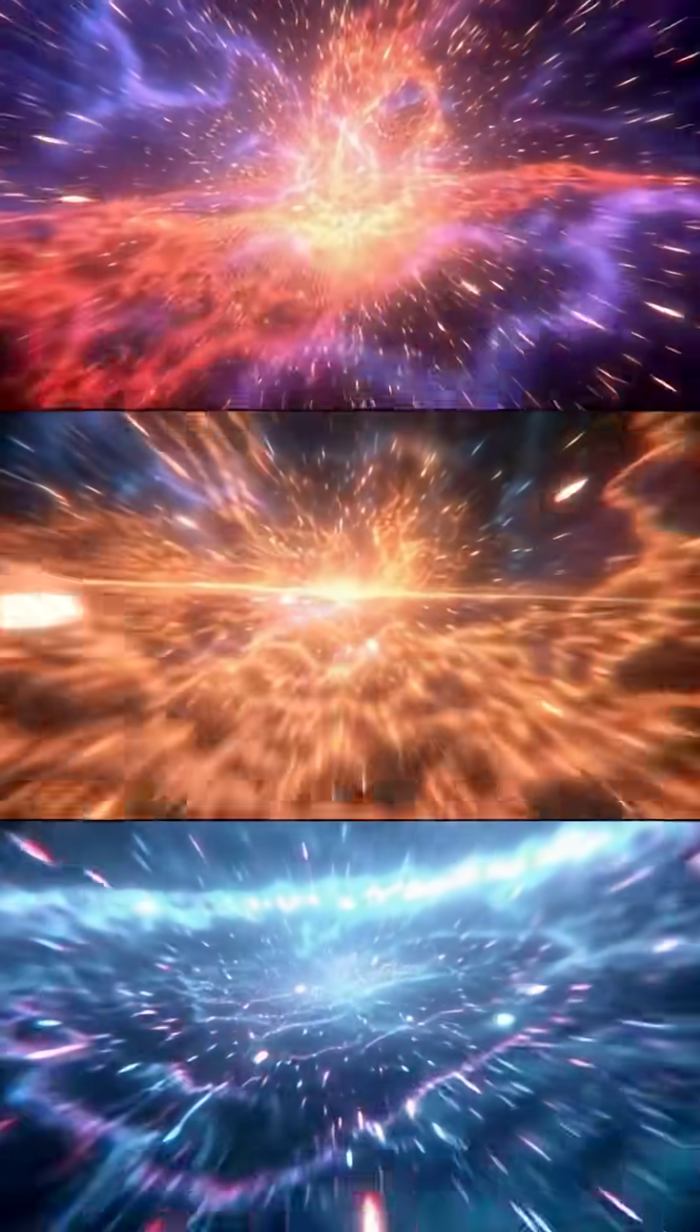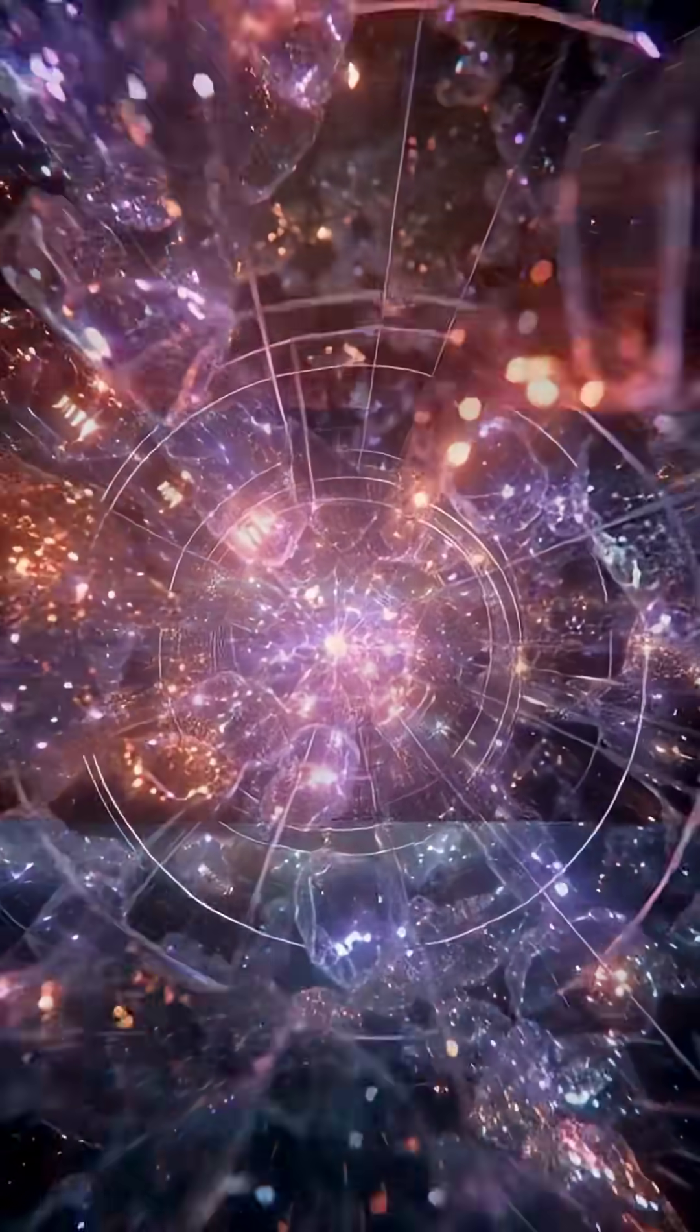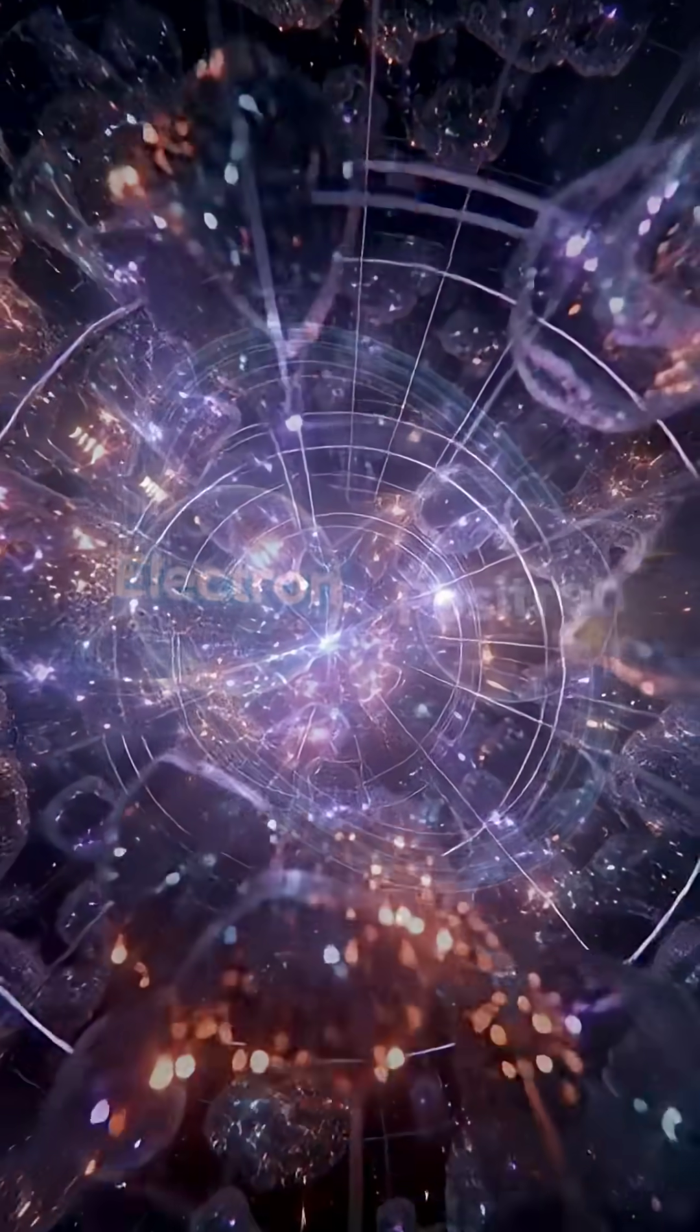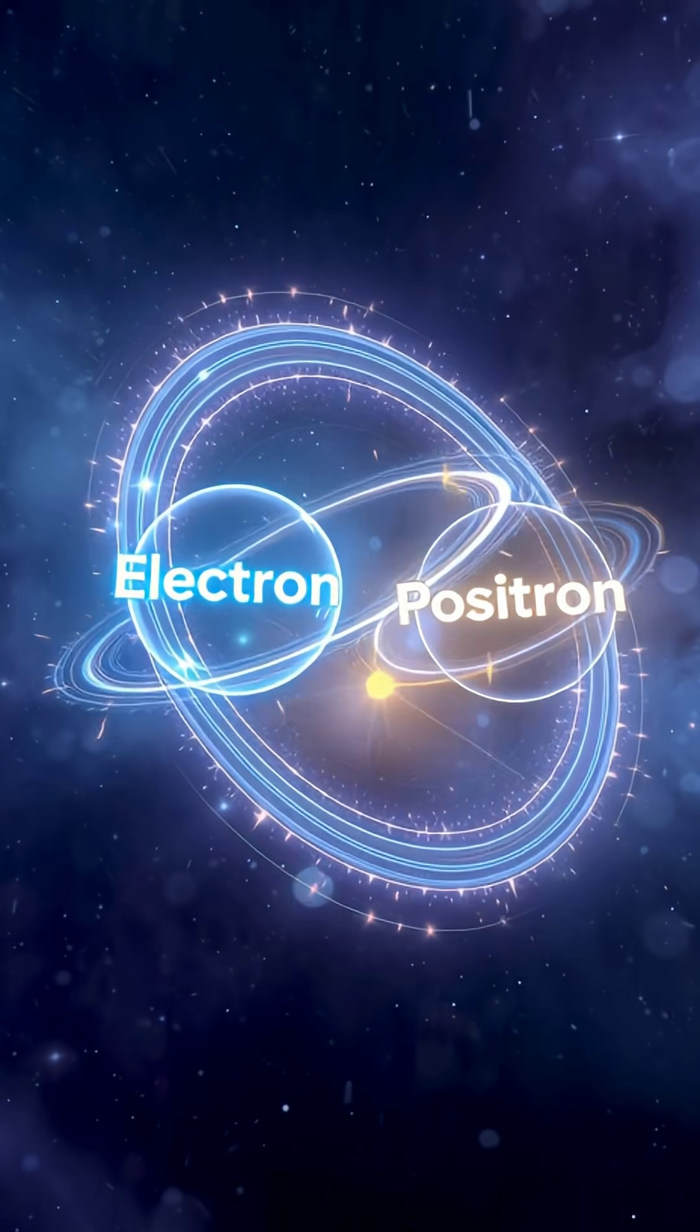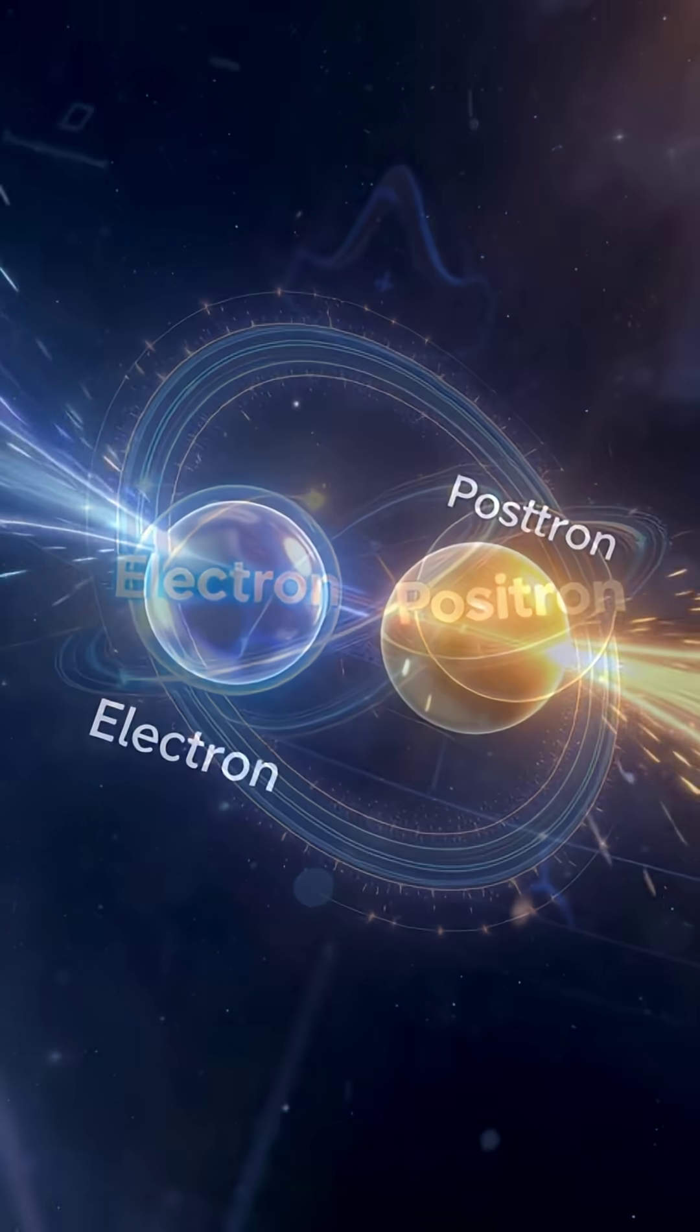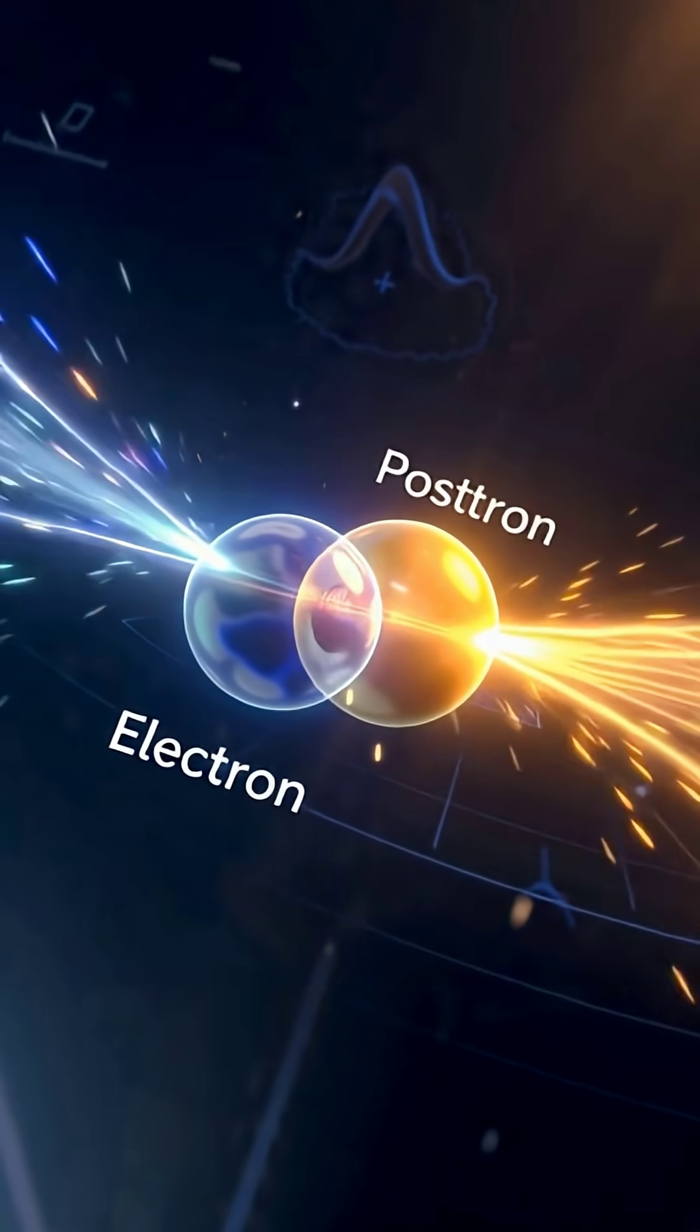Antimatter, the mysterious twin of normal matter. Each antimatter particle is the opposite of a particle we already know, like positrons, the anti-version of electrons. First predicted by Paul Dirac and discovered in 1932, antimatter changed our understanding of the universe forever.